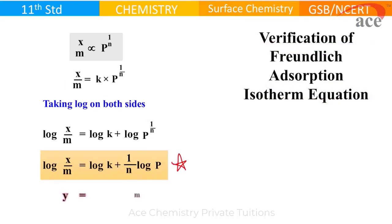This equation resembles the equation of a straight line: y is equal to mx plus c, where c is log k, y value will be log x by m, x value will be log P, and m value will be 1 by n. You know m is the slope.